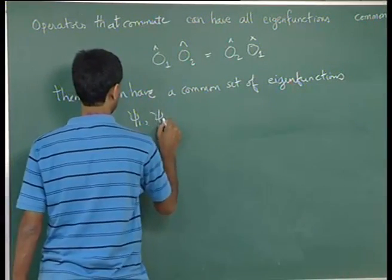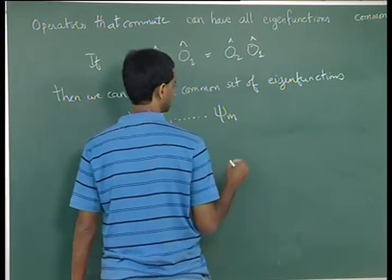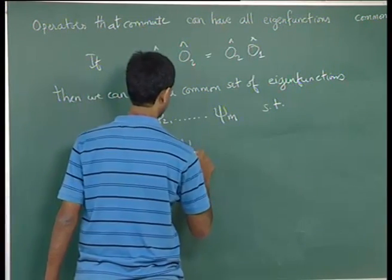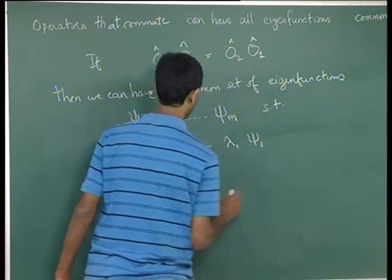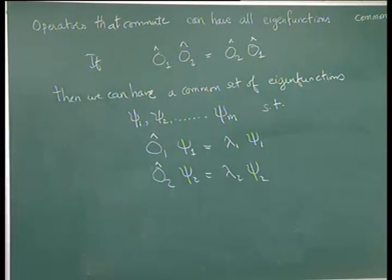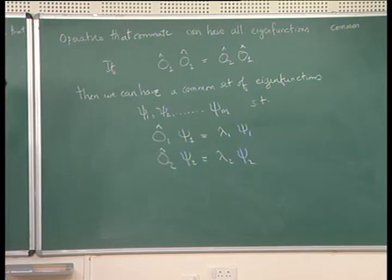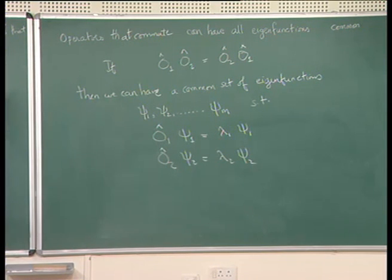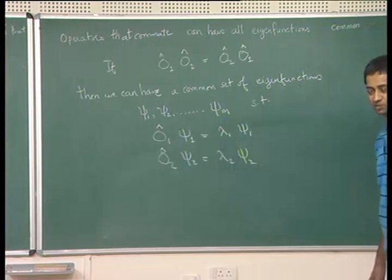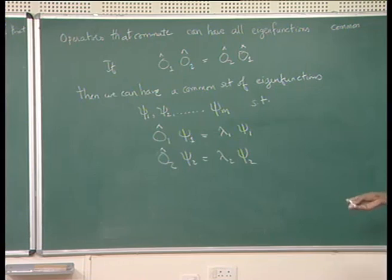If operator 1 times operator 2 equals operator 2 times operator 1, then we can have a common set of eigenfunctions psi_1, psi_2 up to psi_m. So you can choose a set of eigenfunctions that are common to both operators. Typically, when you were working on the hydrogen atom problem, you looked at operators that commuted with the Hamiltonian and said that you can have a common eigenfunction.